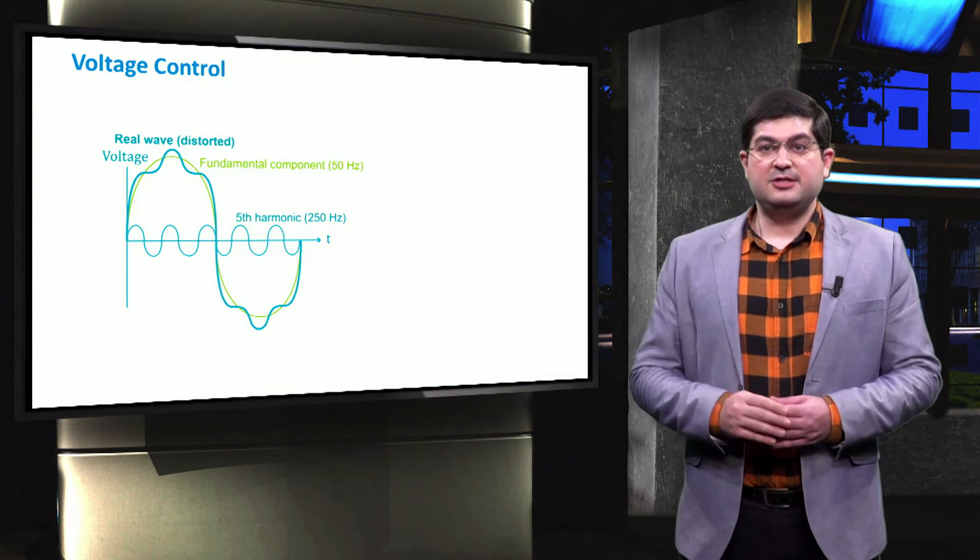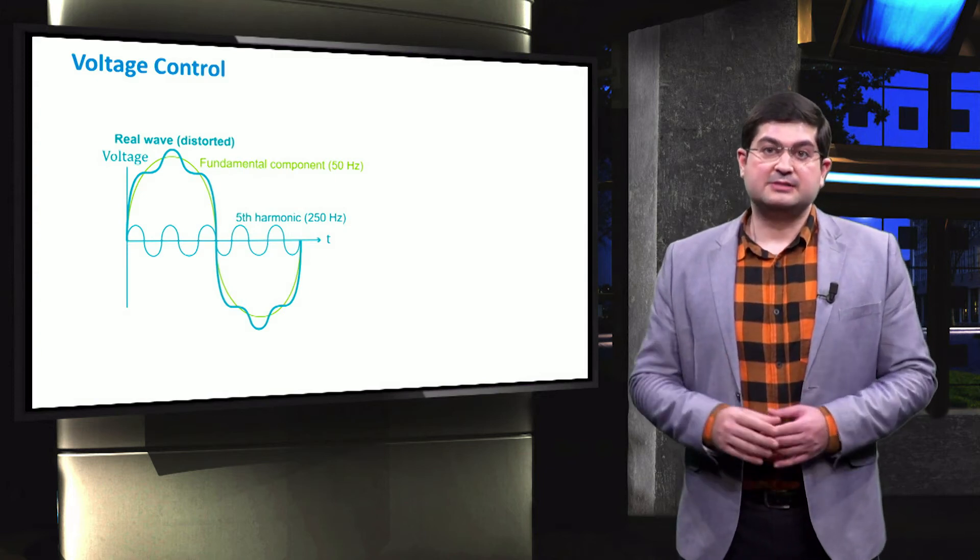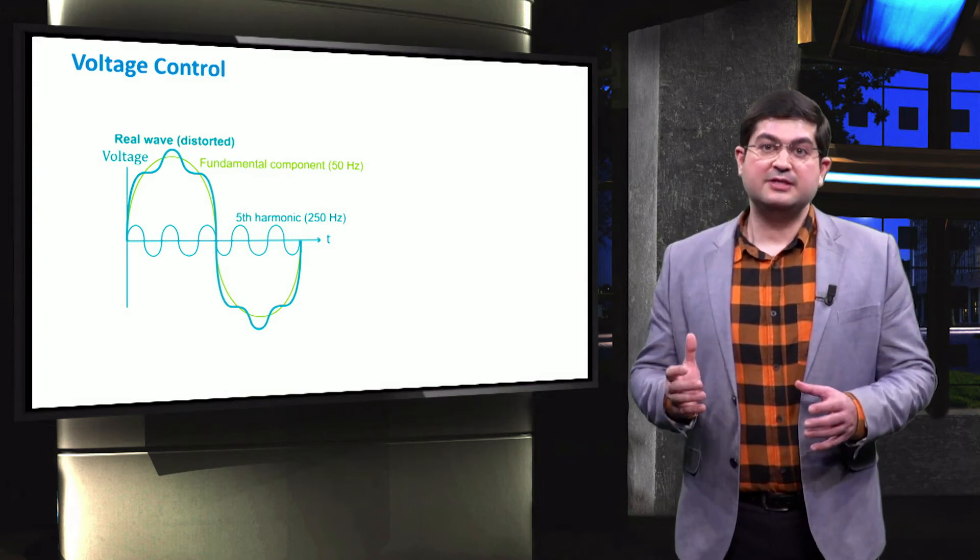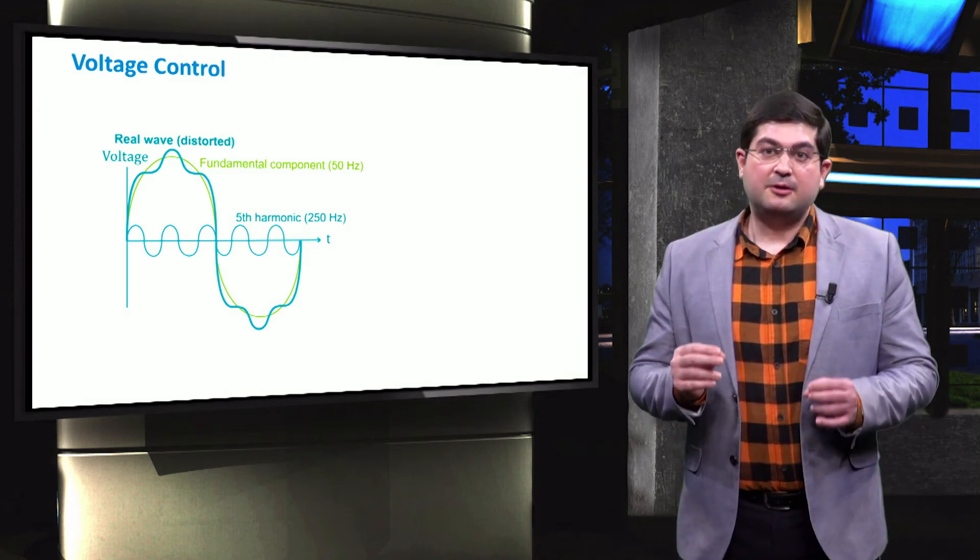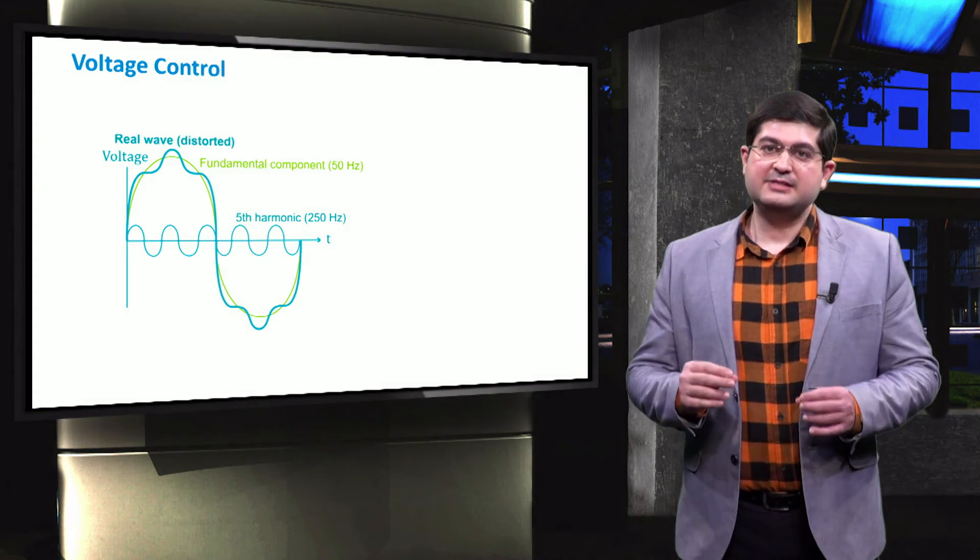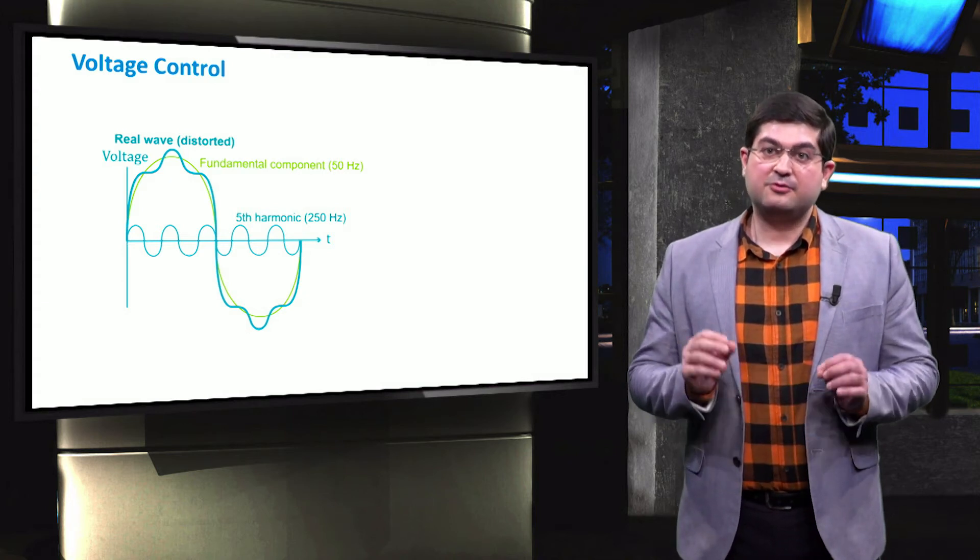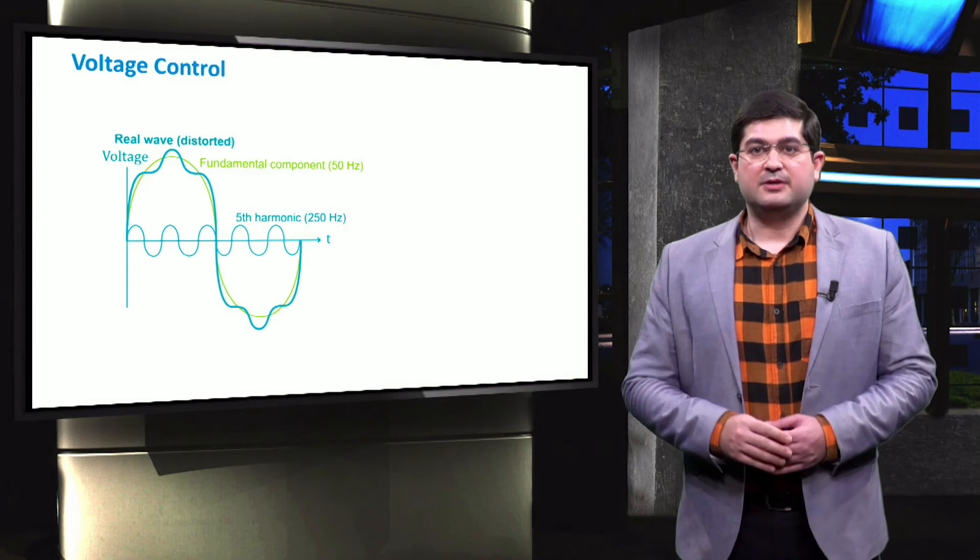Another possible issue with voltage is harmonics, which is defined as voltage signals with relative value to the fundamental component of the signal. Harmonics can create many problems in microgrids, like increased power losses.